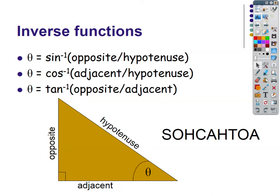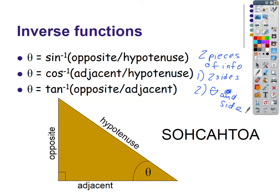We also have to be able to do the inverse functions — inverse sine, inverse cosine, inverse tangent — which give you the angle you're looking for. The prior functions help you solve for a side if you have the angle. For any triangle problem, you only need two pieces of information: either two sides, or an angle and a side. Once you have either of those, you can solve.